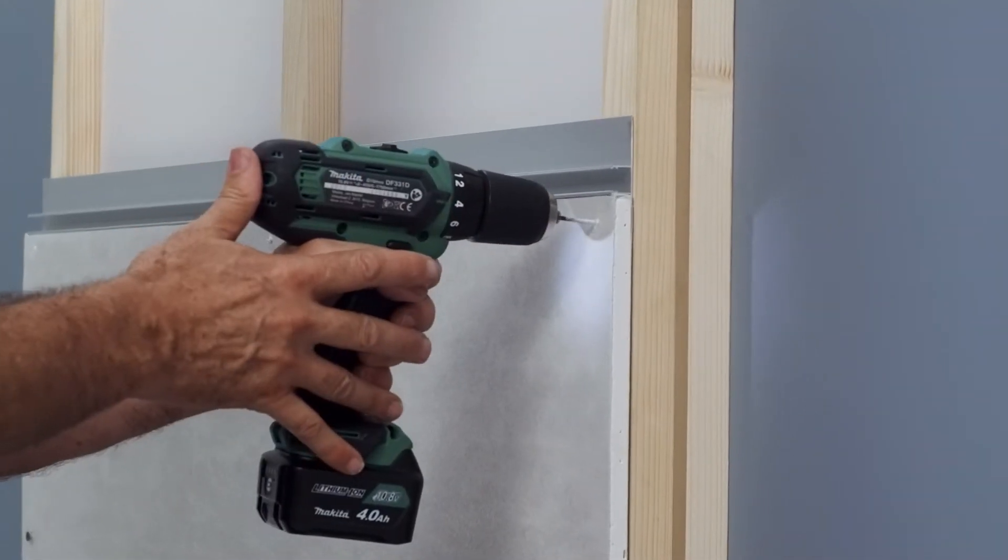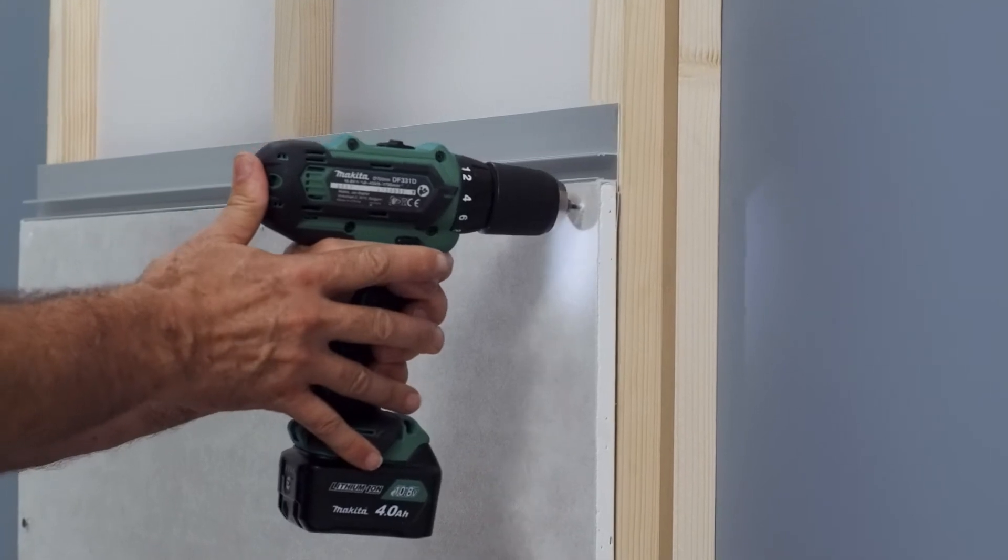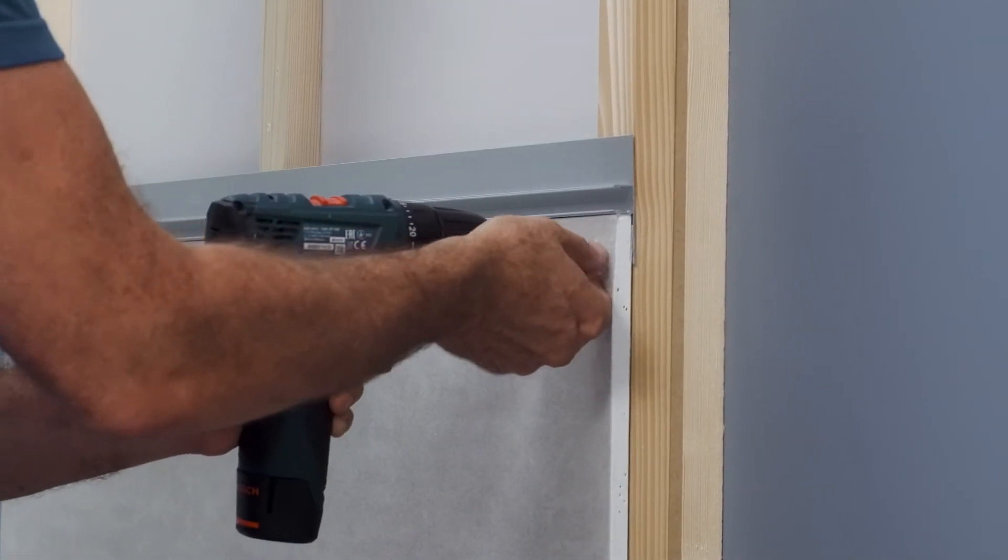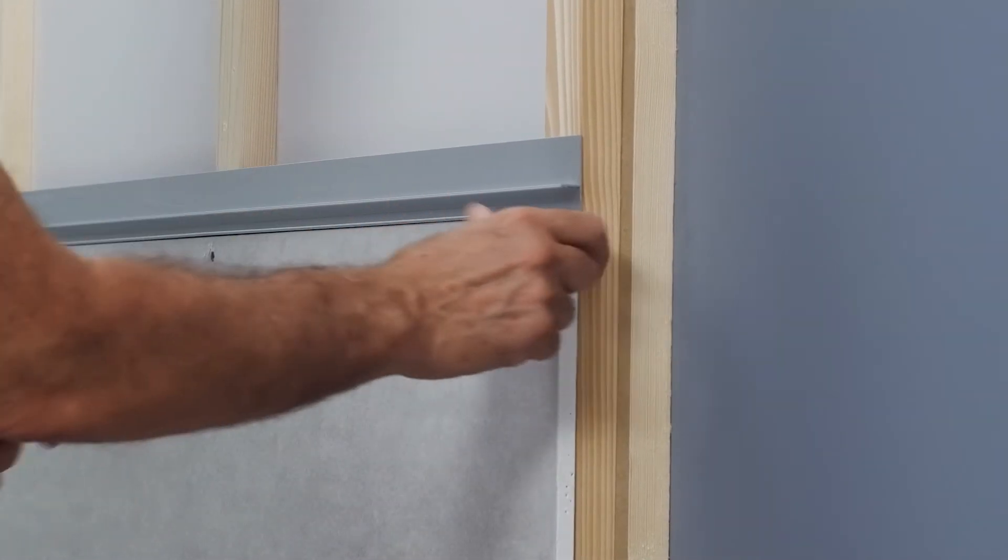In order to screw the drywall and light profile to the support structure, it is important to pre-drill holes in the aluminium profile before screwing in the screws. Use a drill that is suitable for aluminium.